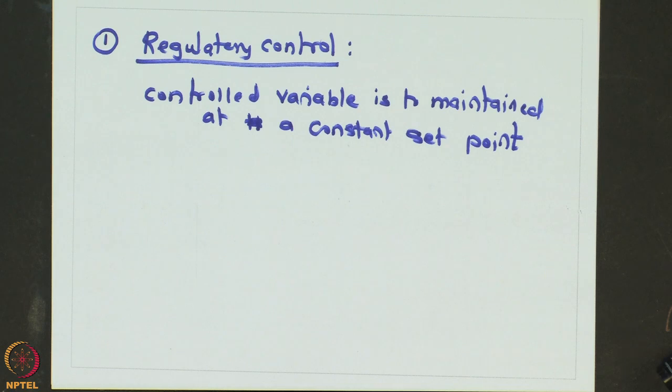The examples being the surge tank which we had considered where the height was supposed to be maintained at 50 percent or this pressure cooker where the pressure has to be maintained at a certain value.